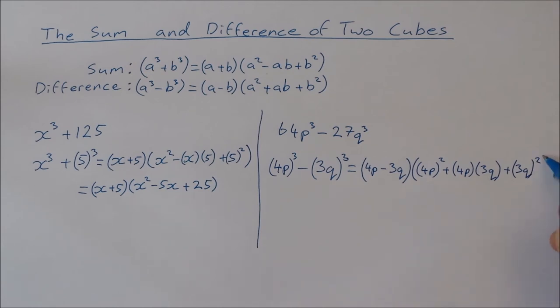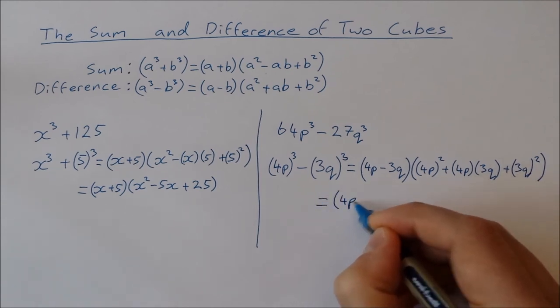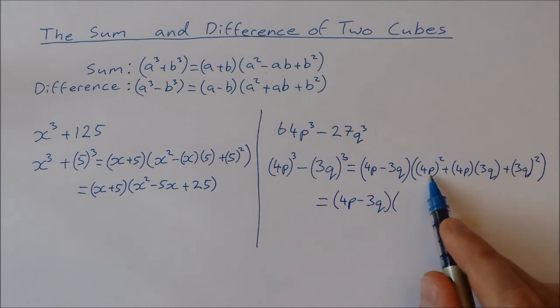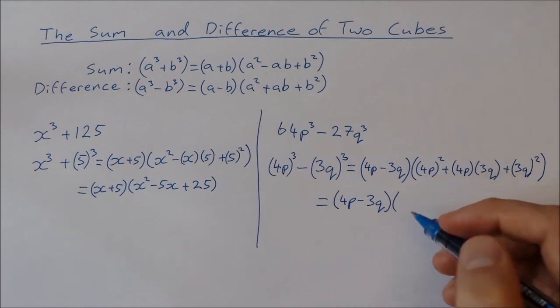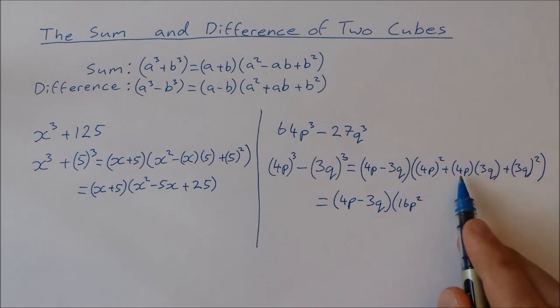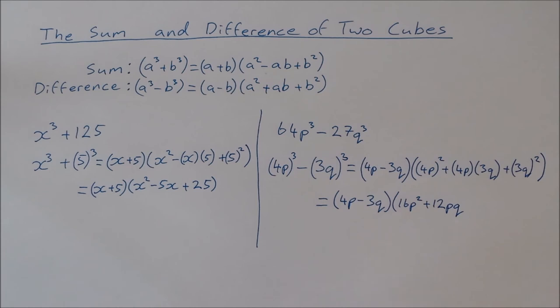Now I've got to expand everything inside here. So that's equal to 4p minus 3q. Times now 4p squared. That's 4p times 4p, which is 16p squared. 4p times 3q is going to give us 12pq.